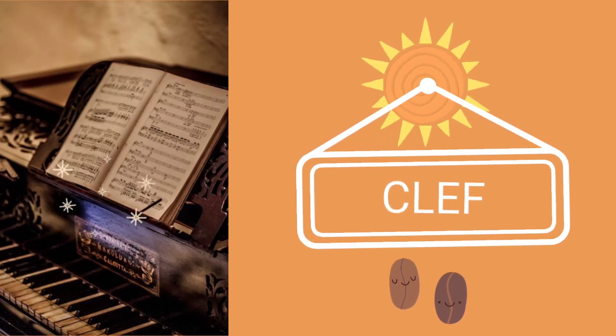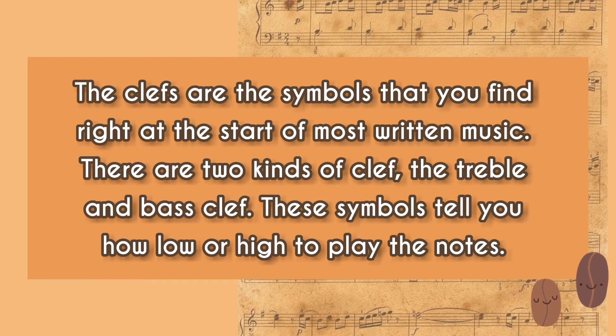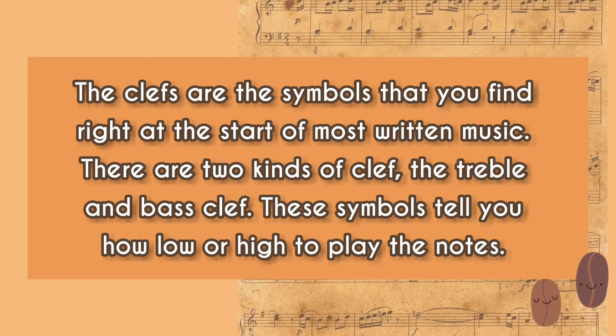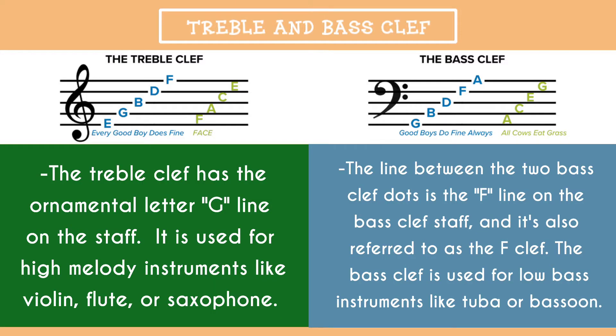Clef. The clefs are the symbols that you find right at the start of most written music. There are two kinds of clef: the treble and the bass clef. These symbols tell you how low or high to play the notes. The treble clef has the ornamental letter G on the staff and is used for high melody instruments like violin, flute, or saxophone. The bass clef marks the F line on the staff — also referred to as the F clef — and is used for low bass instruments like tuba or bassoon.